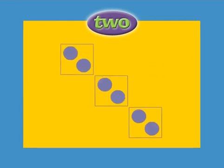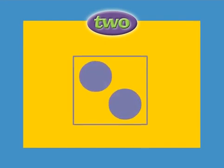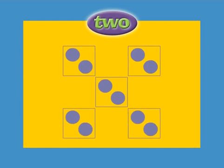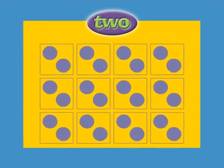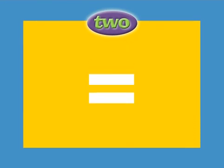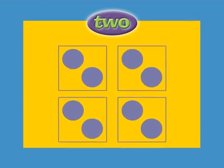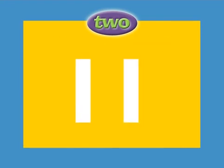Three times two. Eight times two. One times two. Five times two. Seven times two. Twelve times two. Ten times two. Two times two. Four times two. Six times two. Nine times two. Eleven times two.